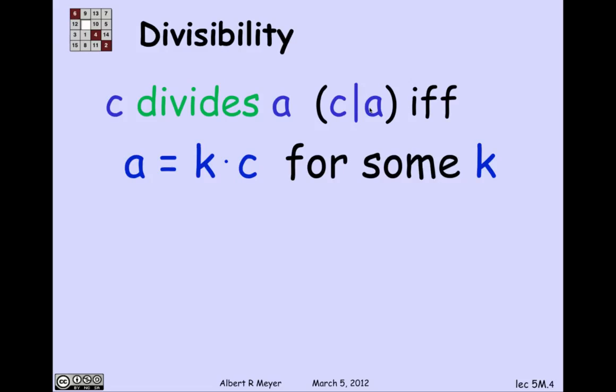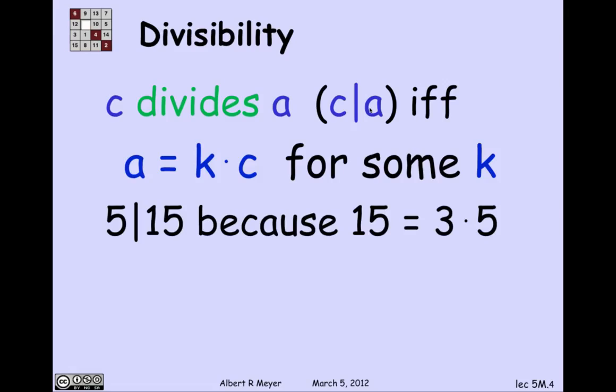It's read as divide. C divides A if and only if A is equal to K times C for some K. And there are a variety of synonyms for C divides A, like A is a multiple of C, and C is a divisor of A. OK. Let's just practice this. So 5 divides 15 because 15 is 3 times 5. A number n divides 0. Every number n divides 0. Even 0 divides 0 because 0 is equal to 0 times n. So 0 is a multiple of every number.